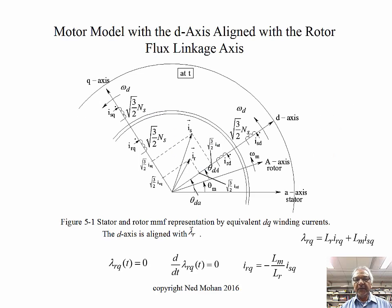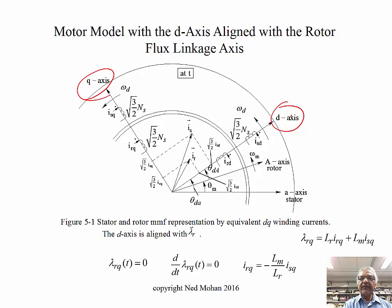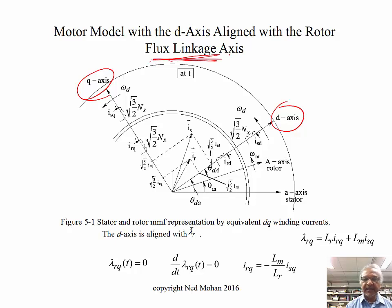We have seen how we can take a squirrel cage induction machine with six coupled windings and convert it into two sets of two windings each — one on the D-axis and one on the Q-axis. In this case, what we are going to do is align this D-axis to the rotor flux linkage, so the rotor flux linkage axis and D-axis align.